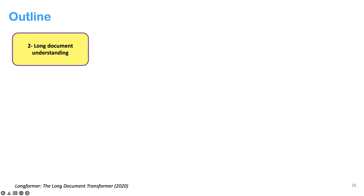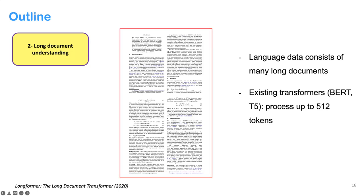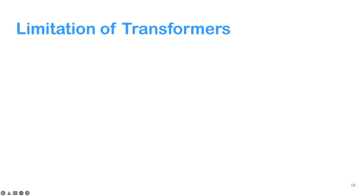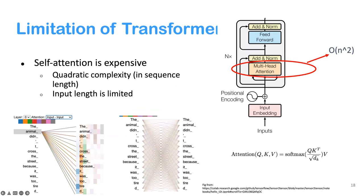The next part is long document understanding. Many NLP tasks involve long documents — scientific papers, legal documents, even many Wikipedia articles. Existing transformers like BERT and T5 can process up to only 512 tokens, which is significantly limiting. Each transformer layer consists of self-attention and feedforward components. Self-attention has quadratic complexity with respect to sequence length because every token attends to all other tokens.